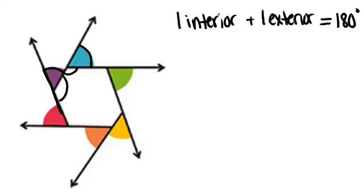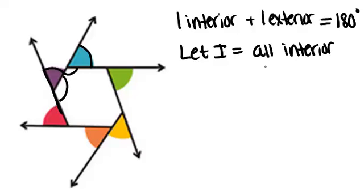That means if we think about all the interior angles and all the exterior angles together, the sum of all of them added up will be 180 times the number of sides. So I'm going to say let I equal all interior angles and let E equal all exterior angles.